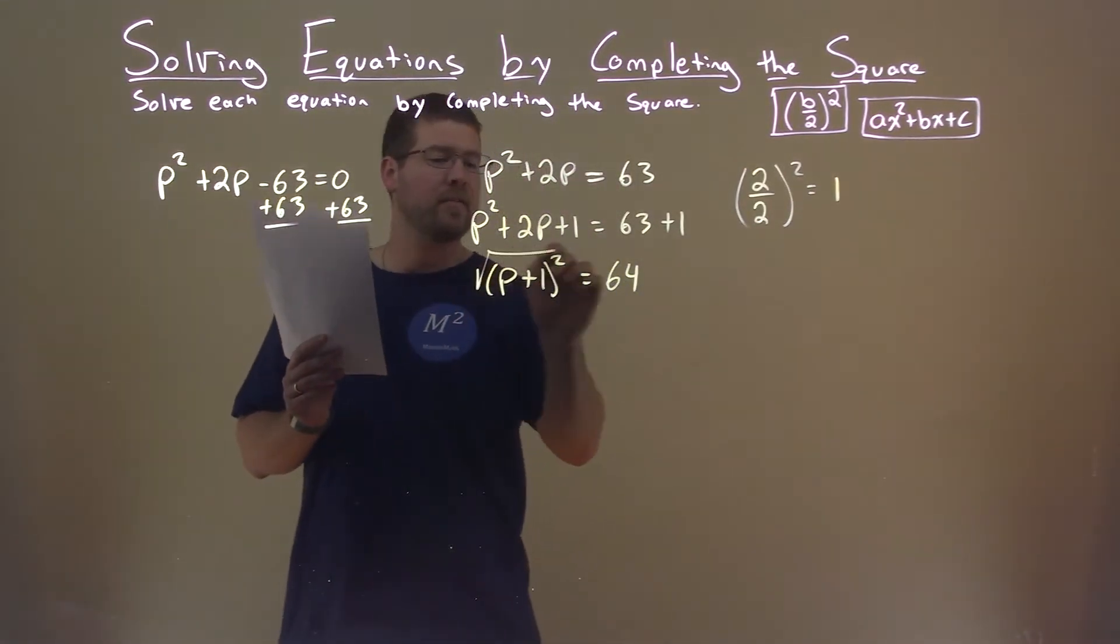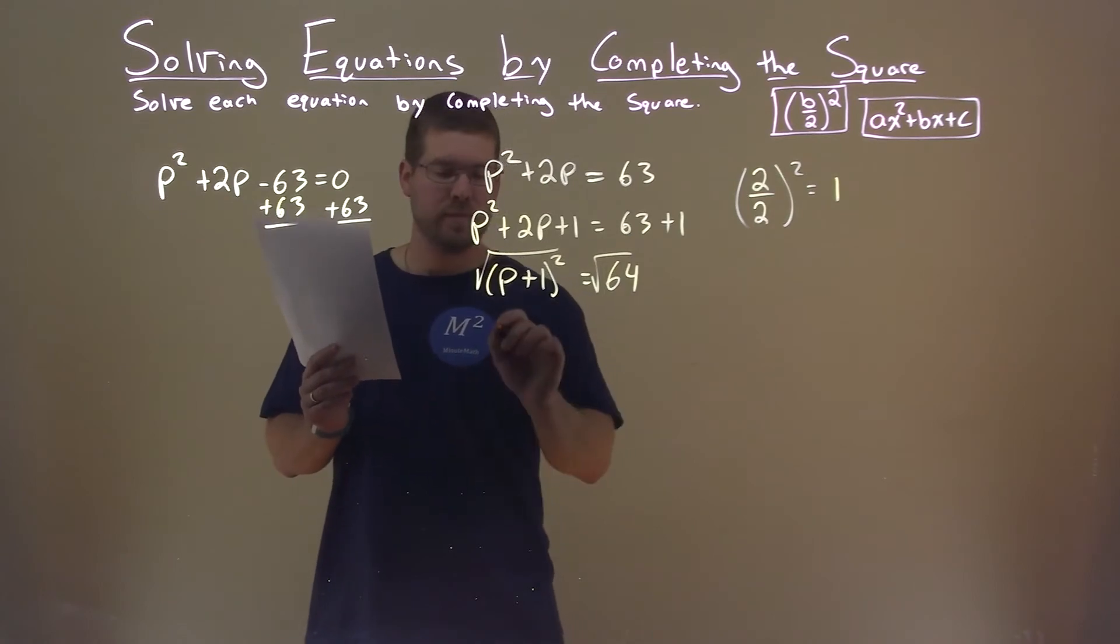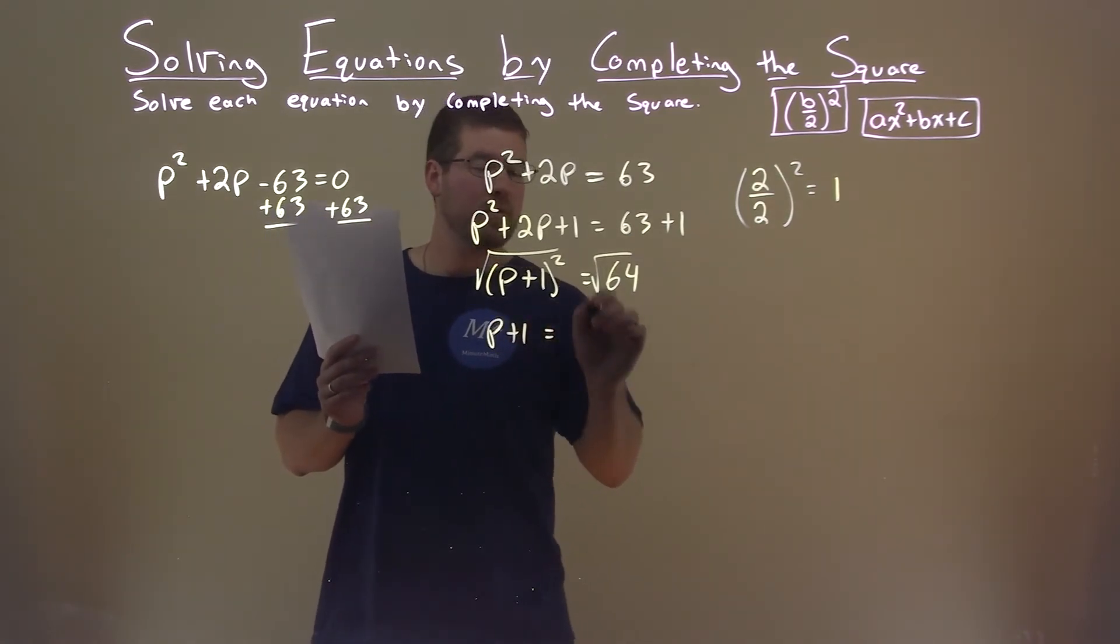We're now going to take the square root of both sides of the equation. I have p plus 1 here by itself, equals, the square root of 64 is 8, and we have plus or minus now.